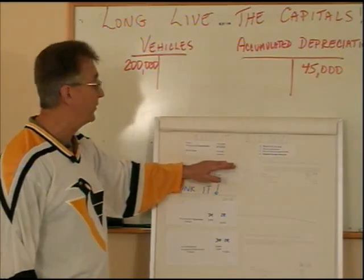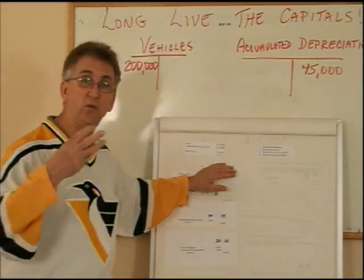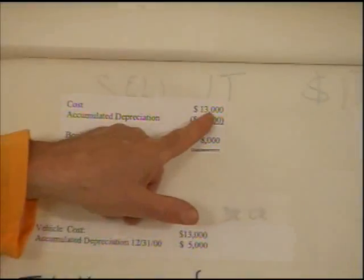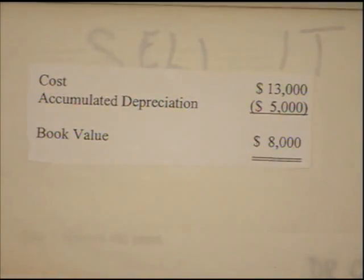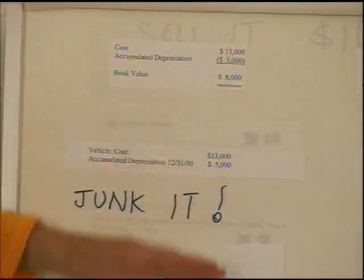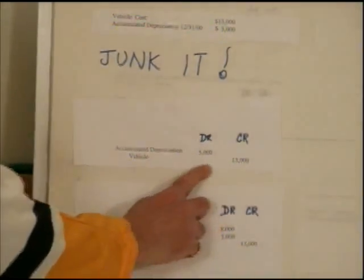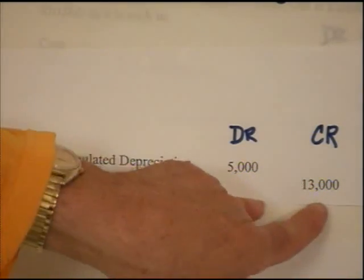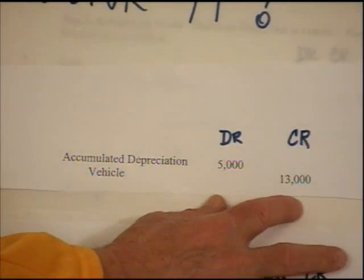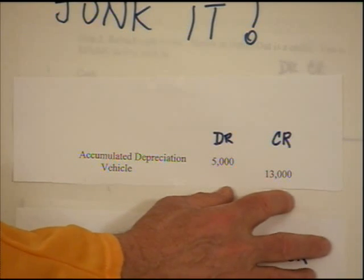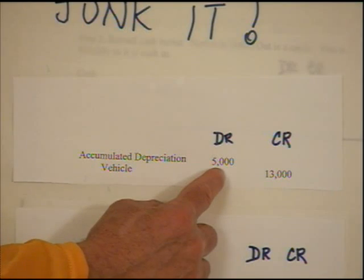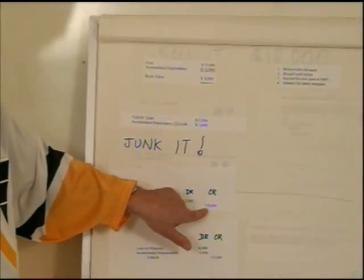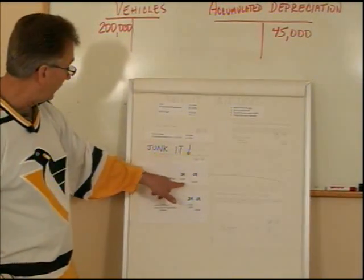Regardless of whether we junk it, sell it, or trade it in, we have to remove the asset from the books. That means we remove both dollar amounts: the $13,000 from vehicles and the $5,000 from accumulated depreciation. The opening part of that entry is a debit to accumulated depreciation of $5,000 and a credit to vehicle of $13,000. Note this is not a complete journal entry yet — it's just the opening part, and the entry is currently out of balance.